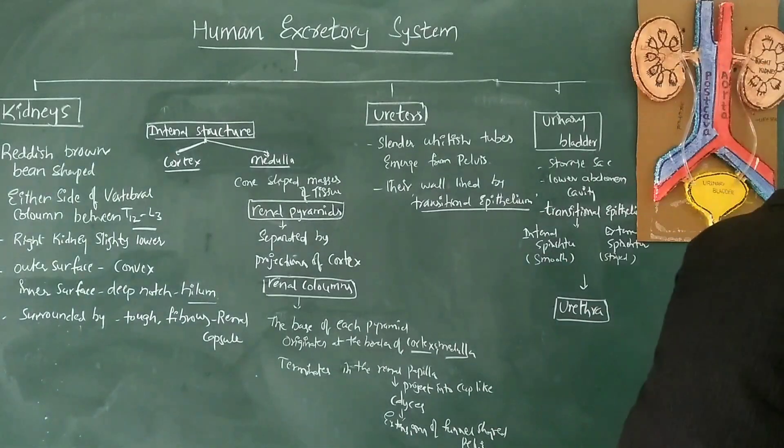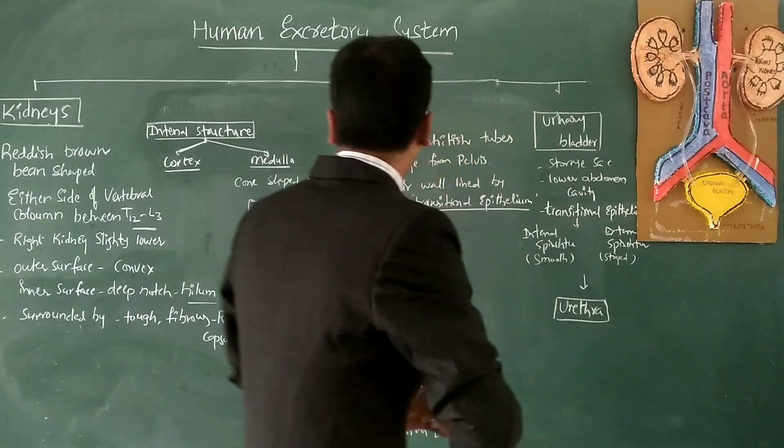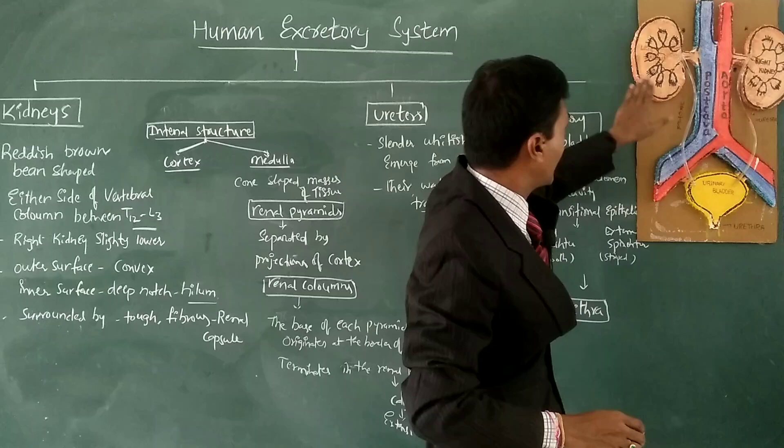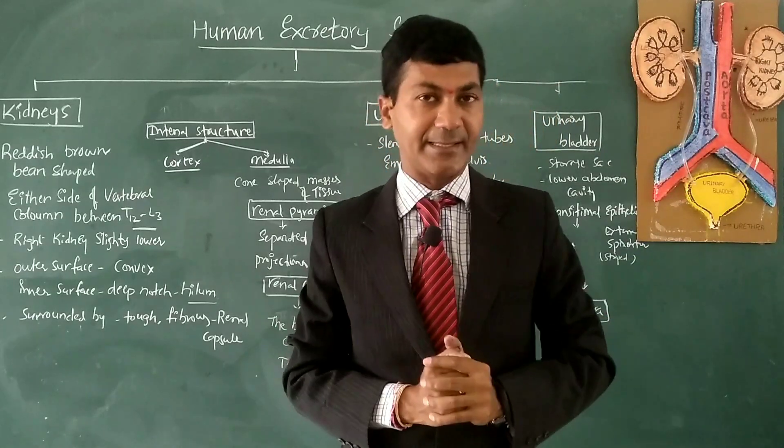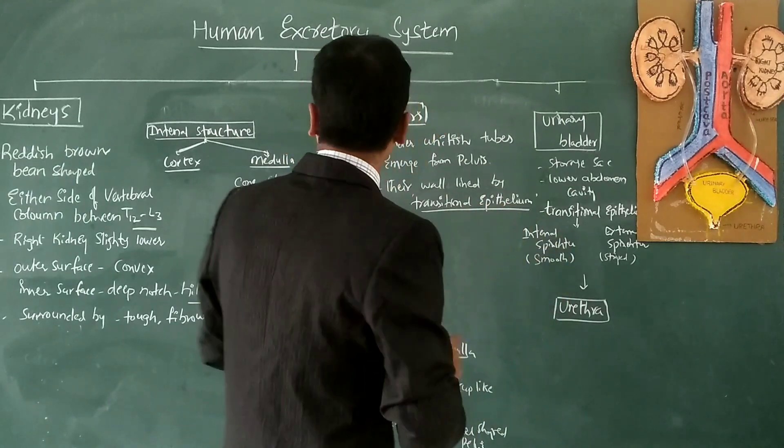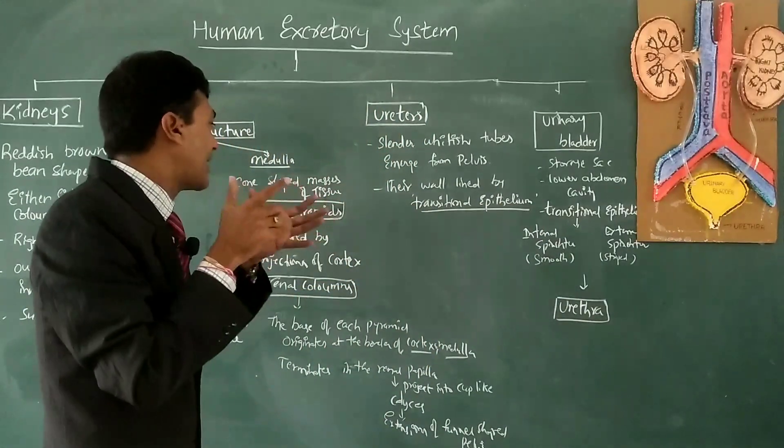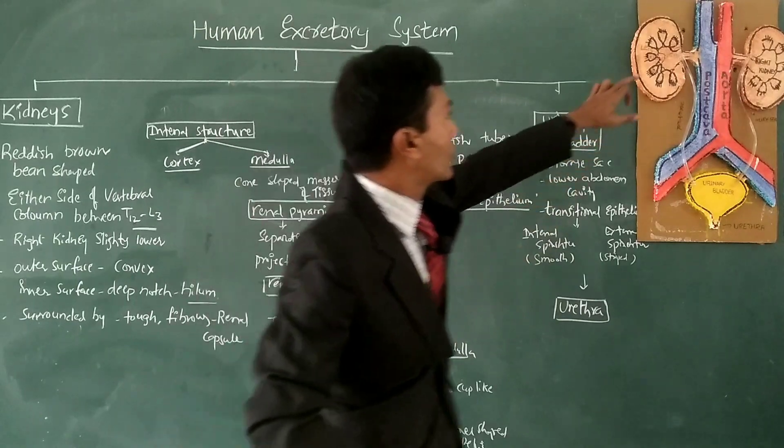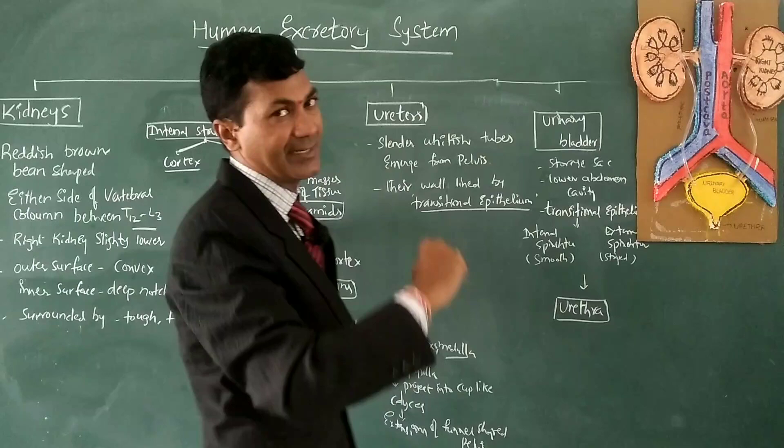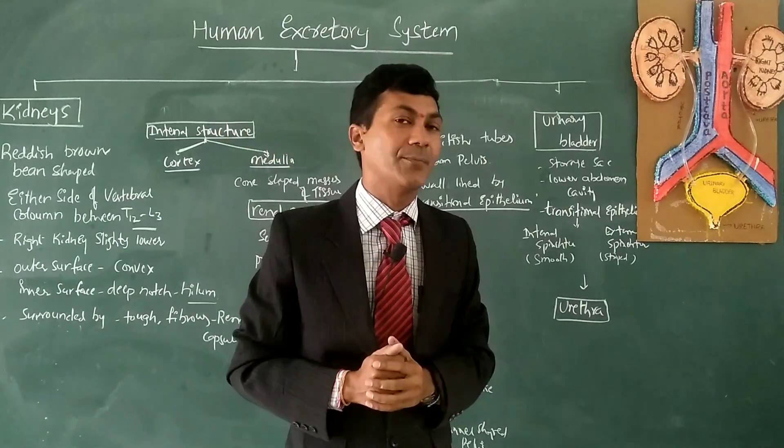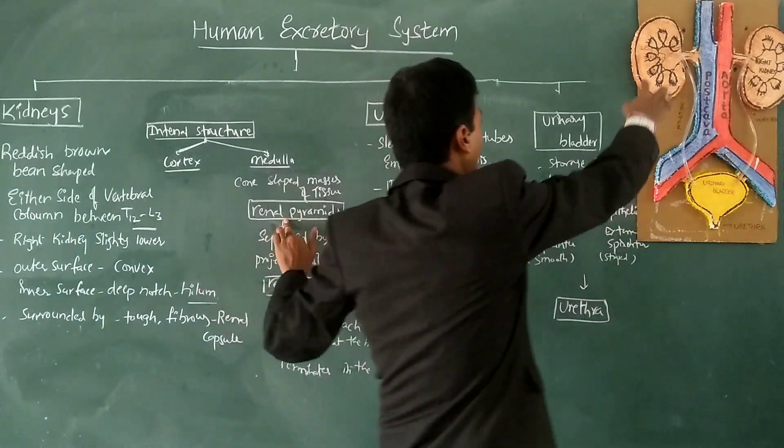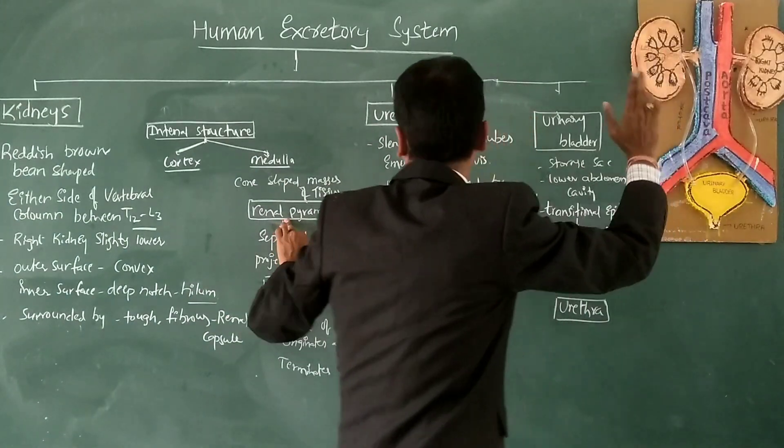Coming to the internal structure of the kidney, the outer region is known as the cortex and the inner region is known as the medulla. The medulla has cone-shaped masses of tissues called renal pyramids, located in the medulla region.